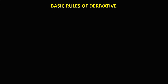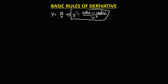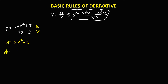For the quotient rule: if y equals u over v, then y prime equals v times the derivative of u minus u times the derivative of v, all over v squared. For y equals 2x squared plus 5 over 4x minus 3, we use the quotient rule because the given is rational. U is 2x squared plus 5, du is 4x; v is 4x minus 3, dv is 4.